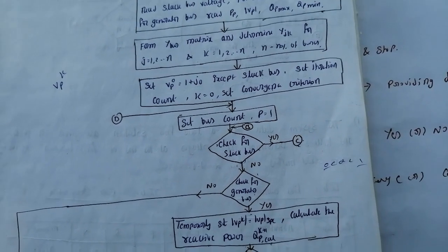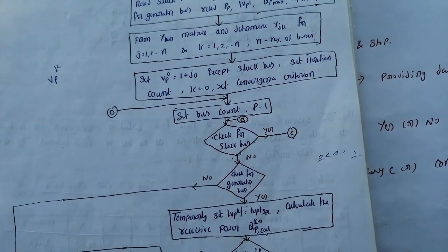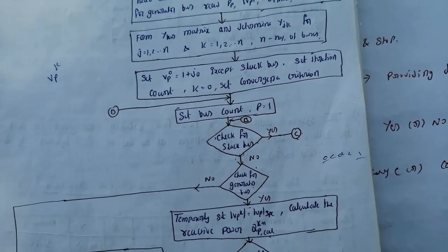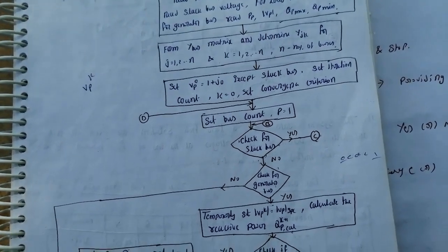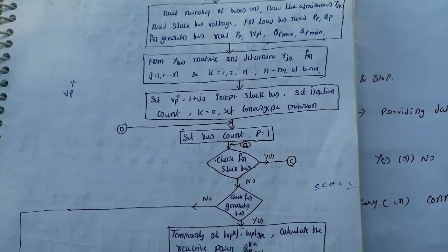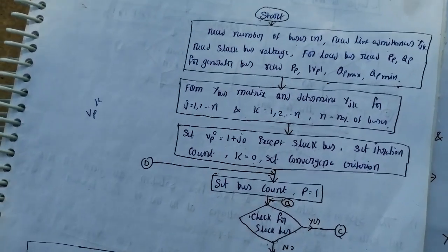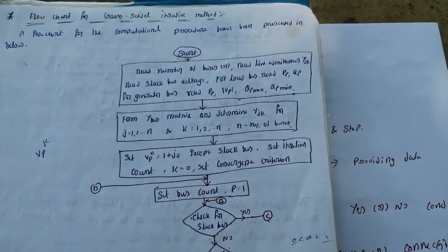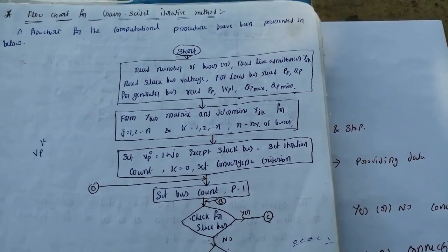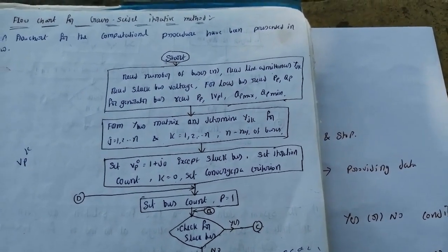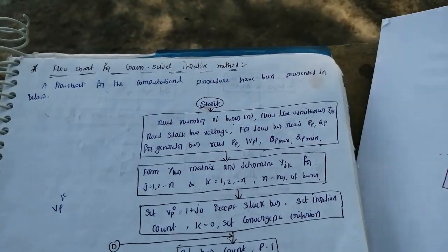After finding the admittance matrix, we assume a flat voltage profile. Since the Gauss-Seidel method is iterative, at the start we don't know the exact values, so we assume initial values called the flat voltage profile. Set V_p^(0) = 1 + j0 for all buses except the slack bus, because for the slack bus the voltage is already specified.